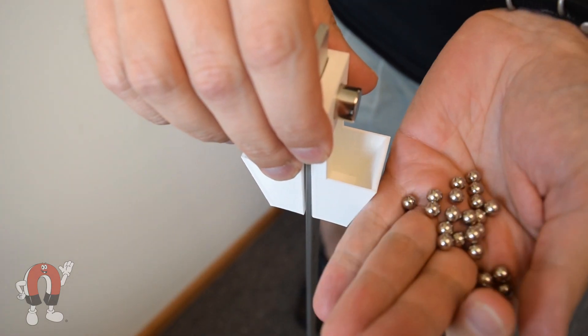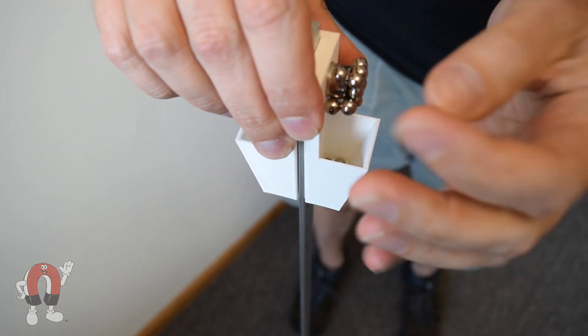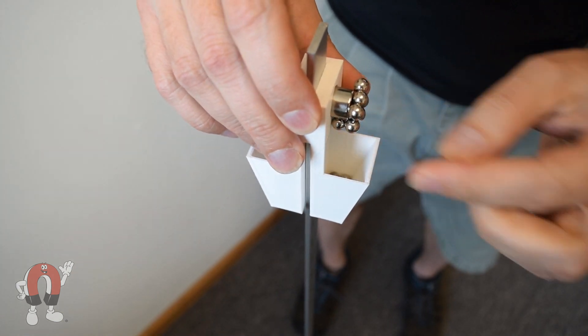To make all the tests fair, we added steel balls to the trolley as ballast for the smaller magnets. This way, the mass of the trolley doesn't change across our tests.